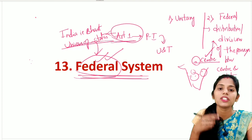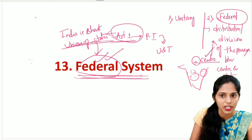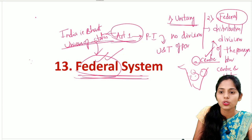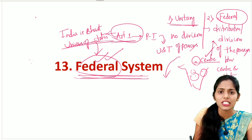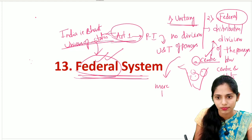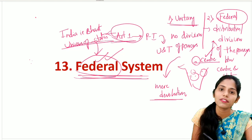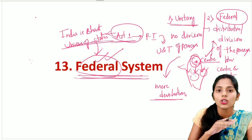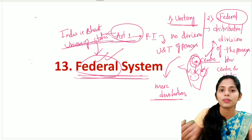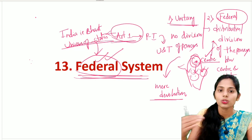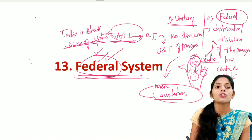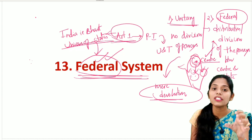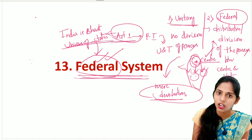Whenever there is a division of powers between the center and the state, it is called a federal government. In the case of a unitary system, there is no division of powers - there is only a mere devolution of power. The power vested with the center may be transferred to the state, but anytime these powers can be snatched away by the center. In the federal system, there is a proper division of powers between the state and the center.